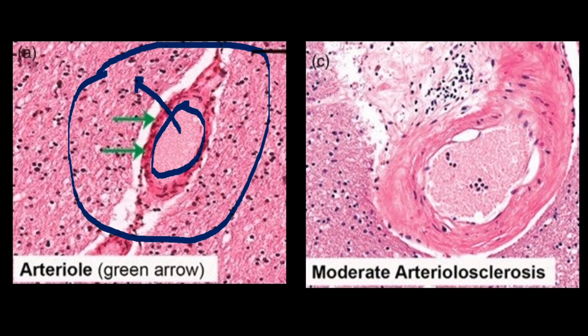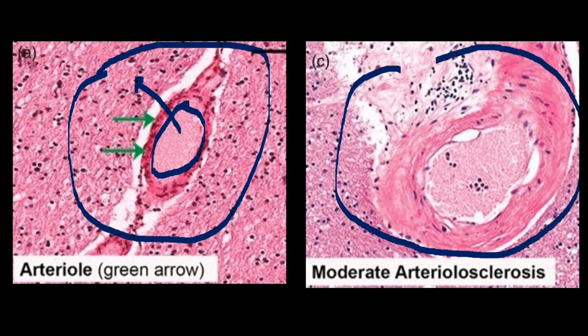If you look to your screen right, you see another blood vessel — this is the image that was used in the challenge. If you look in the enclosed navy blue circle you see the blood vessel. But if you compare the blood vessel wall indicated by this line to the blood vessel wall on the normal arteriole, note that the blood vessel wall on your screen right is a lot thicker than the blood vessel wall on your screen left.